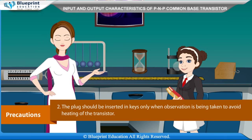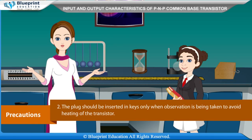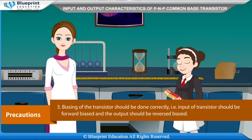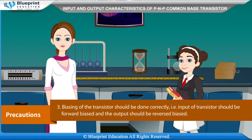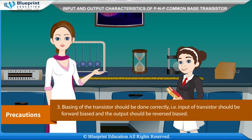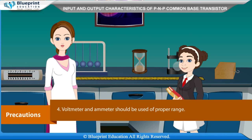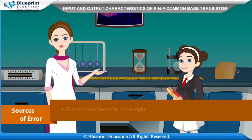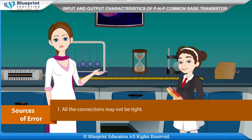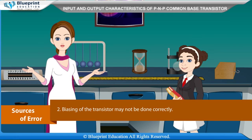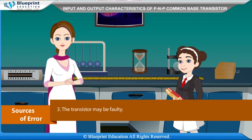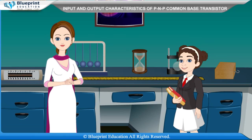Precautions: All connections should be neat and tight. The plug should be inserted in keys only when an observation is being taken, to avoid heating of the transistor. Biasing of the transistor should be done correctly — the input should be forward biased and output reverse biased. Voltmeters and ammeters should be used of proper range. Sources of error: connections may not be tight, biasing may be incorrect, or the transistor may be faulty.